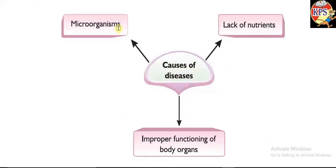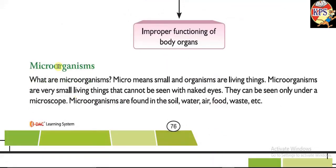The causes of diseases are: microorganisms, lack of nutrients, and improper functioning of our body. Microorganisms — 'micro' means small and 'organisms' means living things — so microorganisms means small living things. They are very small living things that cannot be seen with the naked eye. We need a microscope to see them.